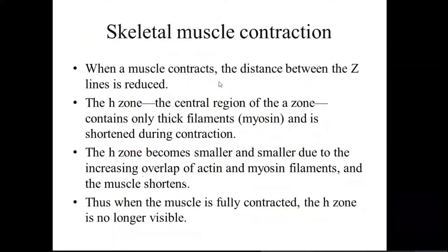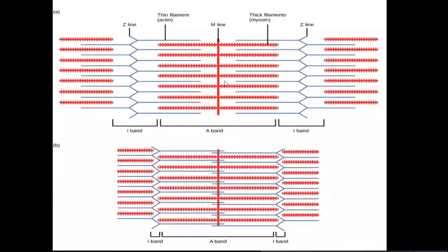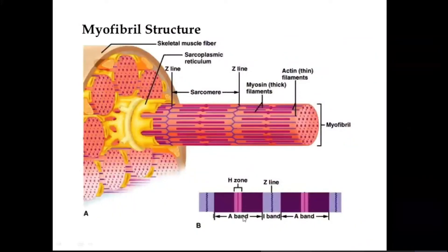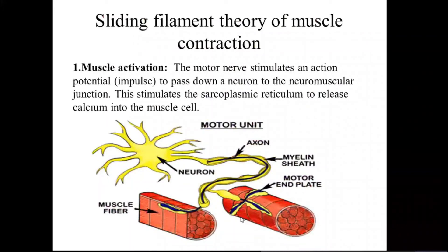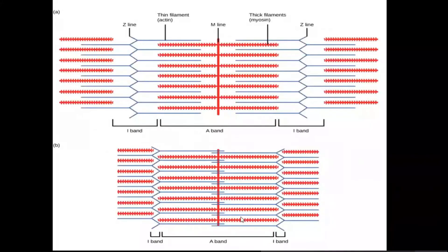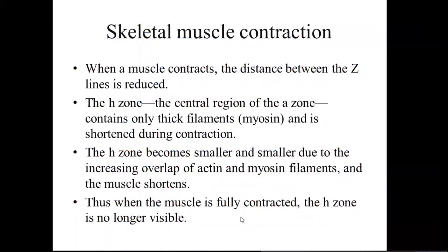The H-zone is the central line that transects the A-band, which contains both myosin and actin. The H-zone's central region contains only thick myosin filaments and shortens during contraction — it is the mid-part of the A-band. As contraction proceeds, the H-zone becomes smaller and smaller due to increasing overlap of actin and myosin filaments. When the muscle is fully contracted, the H-zone is no longer visible.